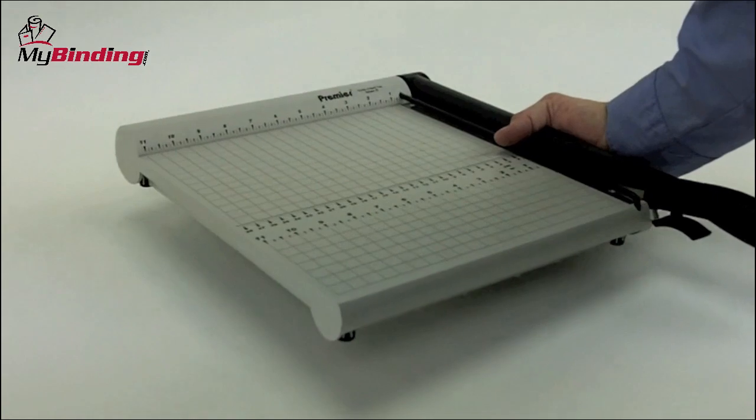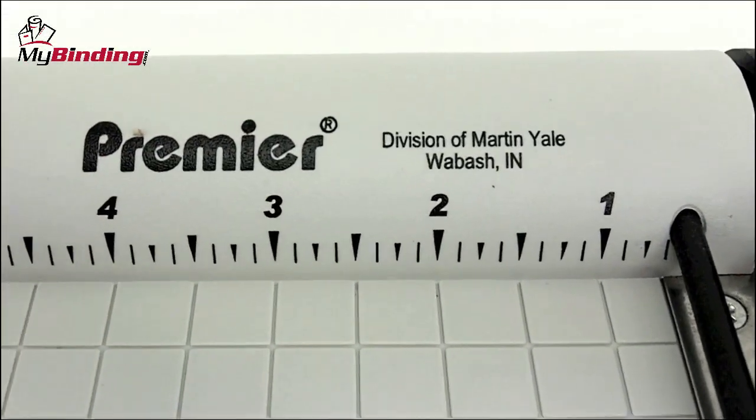Right here, easy as that. All of these polyboard trimmers are great for transport. That's the Premier P215X by Martin Yale.